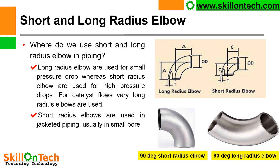Short and long radius elbows. You can see a picture of a 90-degree short radius elbow and a 90-degree long radius elbow. Where do we use short and long radius elbows in piping? Long radius elbows are used for small pressure drop, whereas short radius elbows are used for high pressure drops. For catalyst flows, very long radius elbows are used. Short radius elbows are used in jacketed piping, usually in small spaces. Where flow velocities are high, we have to use long radius elbows to avoid impingement corrosion. If short radius elbows are used for high pressure, high velocity pipelines, then elbow failures may occur very frequently.